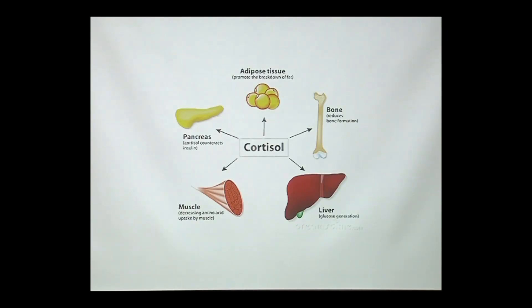In the pancreas, cortisol has effects that counteract insulin — insulin drops down glucose, while cortisol increases it and antagonizes insulin's effects. Cortisol also has complex effects on fat tissue: initially it promotes the breakdown of fat, but ultimately over time it can also promote deposition of fat in different places.